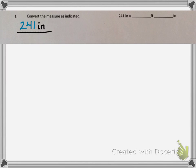The first thing I'm going to do is set up a ratio of 241 inches to x feet. I'm going to set that equal to a constant ratio of 12 inches per 1 foot.